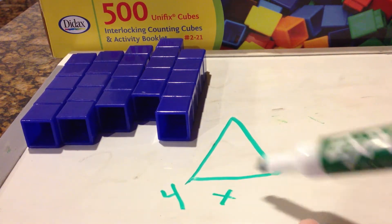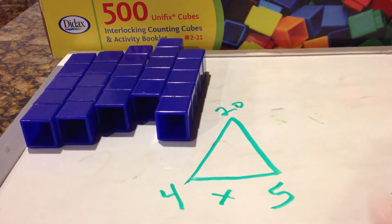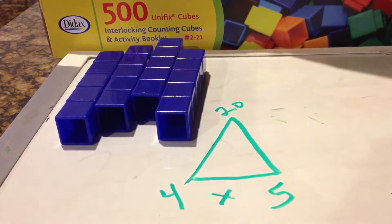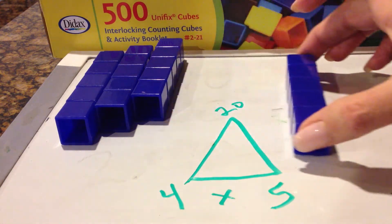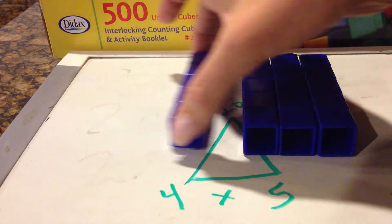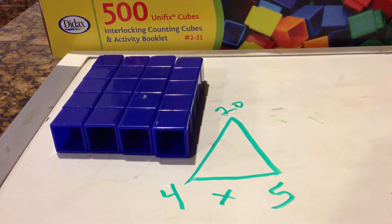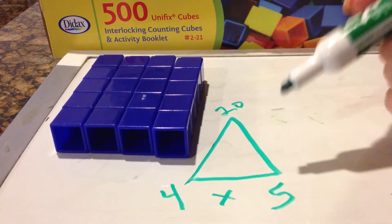4 times 5 equals 20. So we have 1, 2, 3, 4, 5s. And we say that a fact family always looks like a triangle. 4 times 5 equals 20.